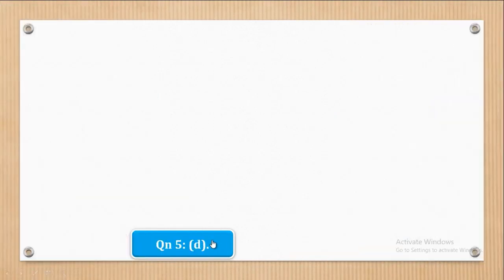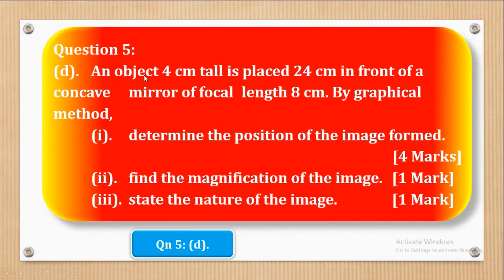Now we shall go to Part D. Part D says: an object 4 cm tall is placed 24 cm in front of a concave mirror of focal length 8 cm. By graphical method, Roman numeral 1: determine the position of the image formed — four marks. The object height is 4 cm, object distance is 24 cm, and the mirror is a concave mirror — a converging mirror — with focal length 8 cm. They have not given us a scale, so we choose our own.